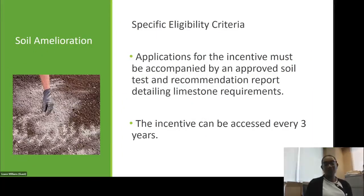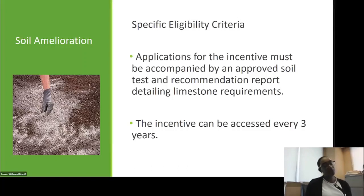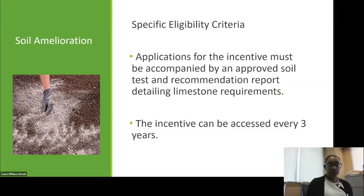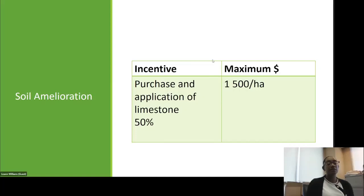Soil amelioration: applications for this incentive must be accompanied by an approved soil test and recommendation report detailing the limestone requirements. This incentive will only be paid when accompanied by a soil test, as the soil test determines how much and when to apply amendments. This incentive can be accessed every three years. The purchase and application of limestone is 50% up to a maximum of $1,500 per hectare.